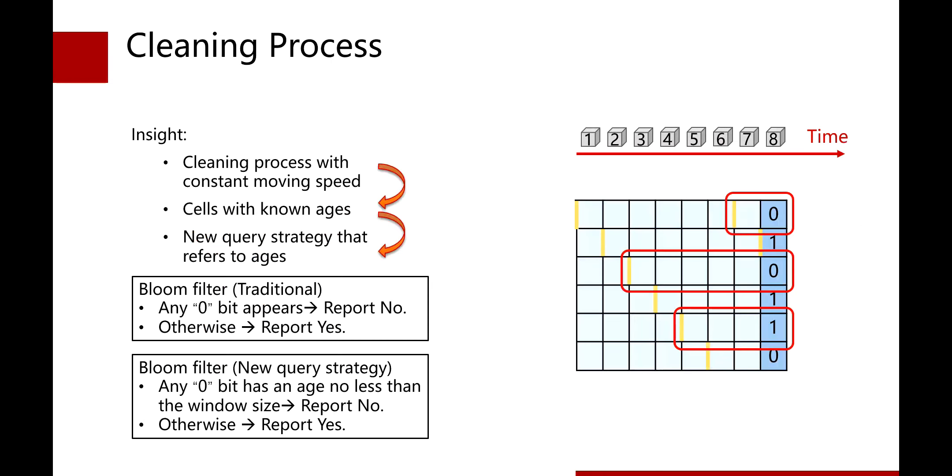Our insight is to use a cleaning process with constant moving speed. Then, based on speed and the different position of each cell, we can calculate the age of each cell. Finally, we update the query step strategy of traditional fixed window algorithm. For the bloom filter, in the fixed window model, we report yes if all selected bits are one. Now, in the sliding window model, only when one zero bit has an age no less than the window size, we report no.